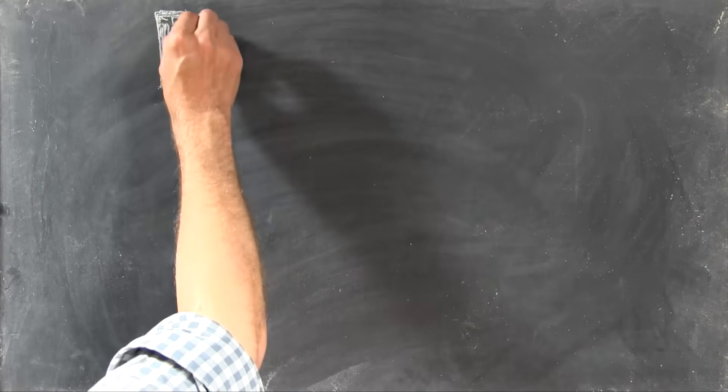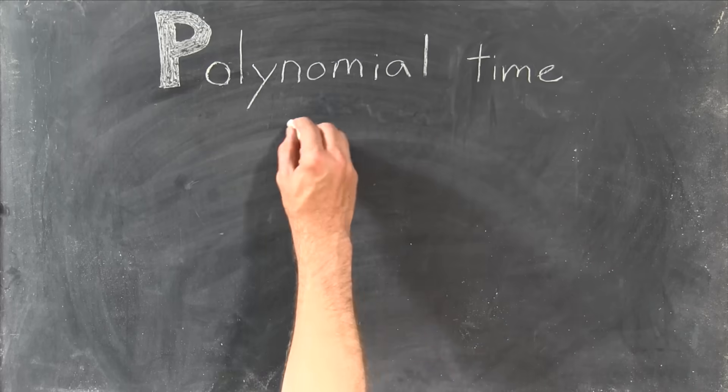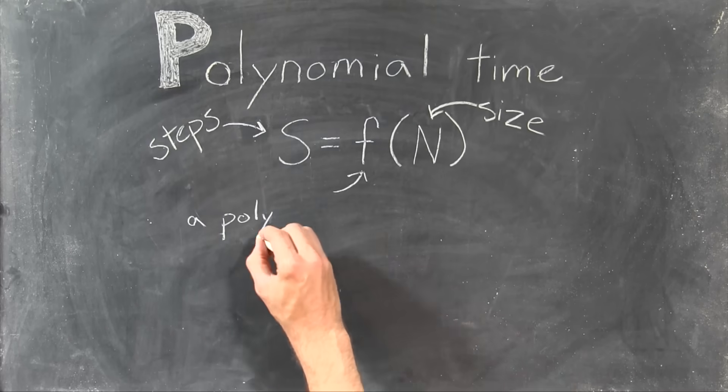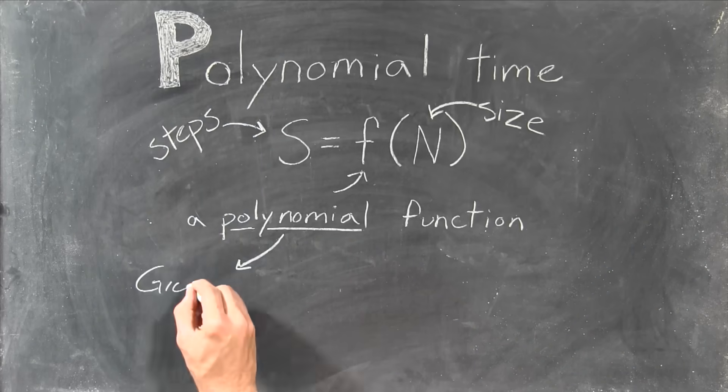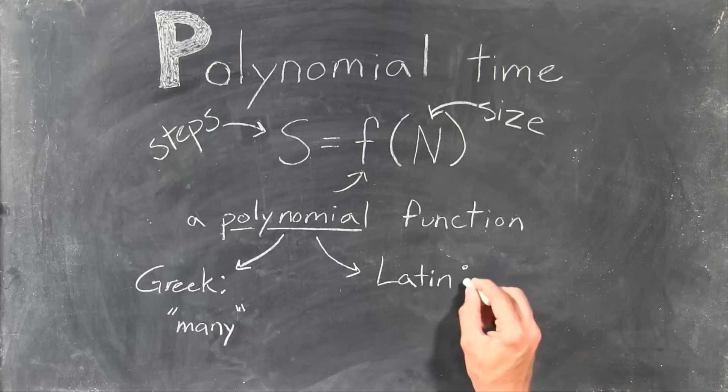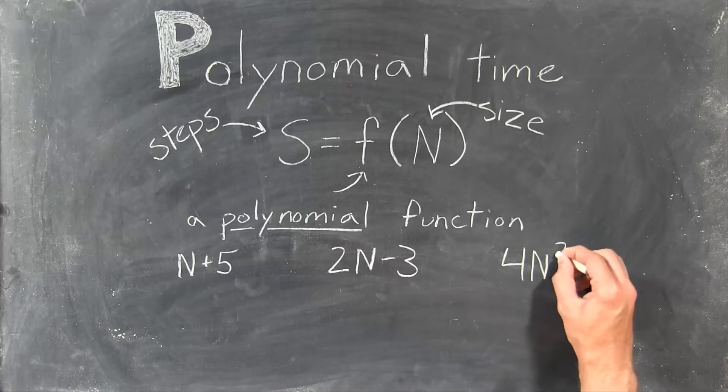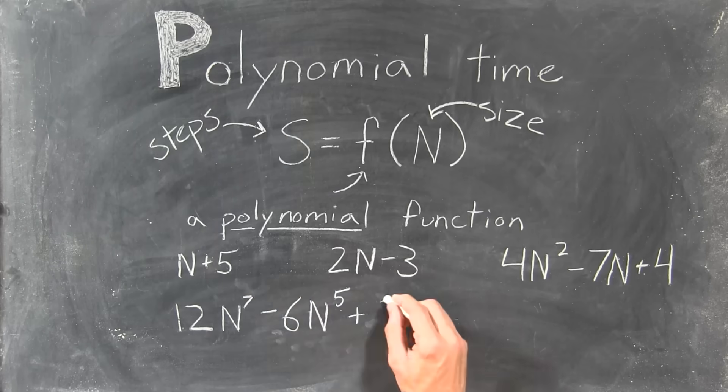Two. P stands for polynomial time. In P, the number of steps you have to do to solve a problem, and therefore the amount of time that it takes, is some polynomial function of its size. Polynomial is a mishmash of Greek and Latin meaning many names, which is, regrettably, a pretty typical example of math's flair for unhelpful terminology. Anyway, polynomials are functions involving n or n squared or n to other powers, like these.